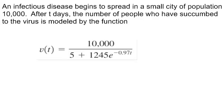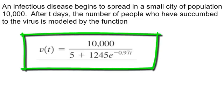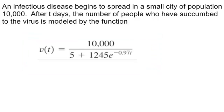So we have a word problem. An infectious disease begins to spread in a small city of population 10,000. After t days, the number of people who have succumbed to the virus is modeled by the function v(t) = 10,000 / (5 + 1,245e^(-0.97t)).